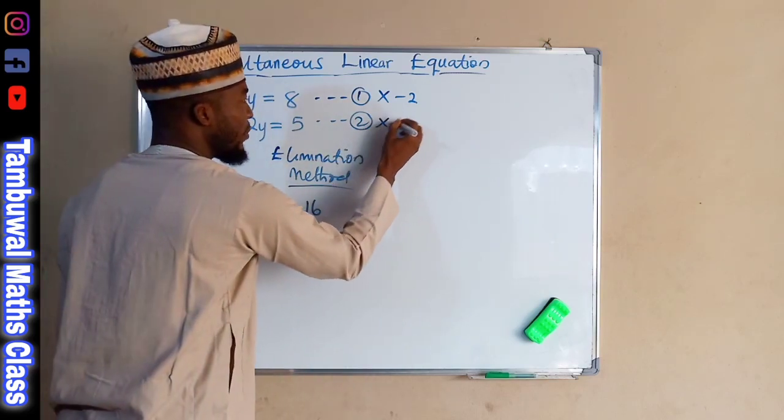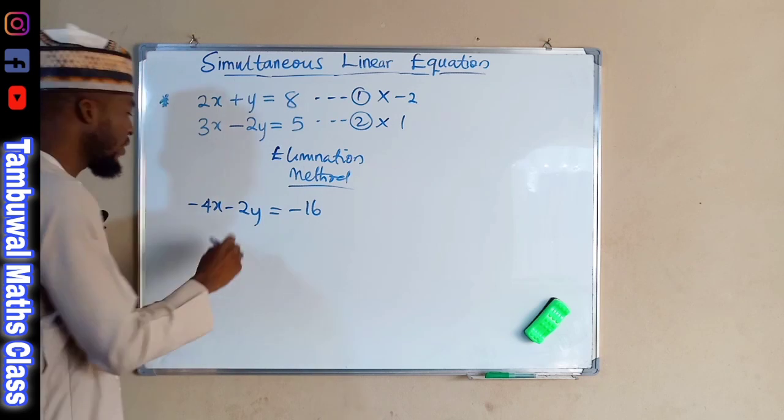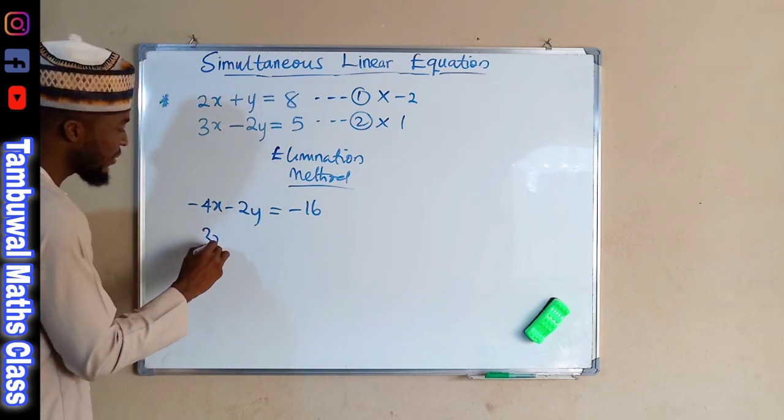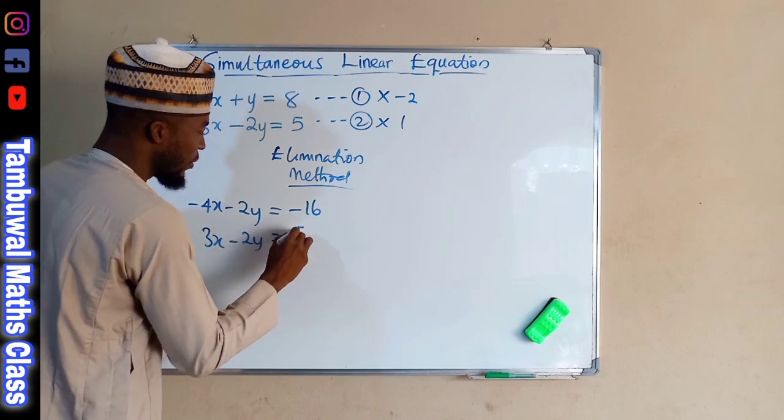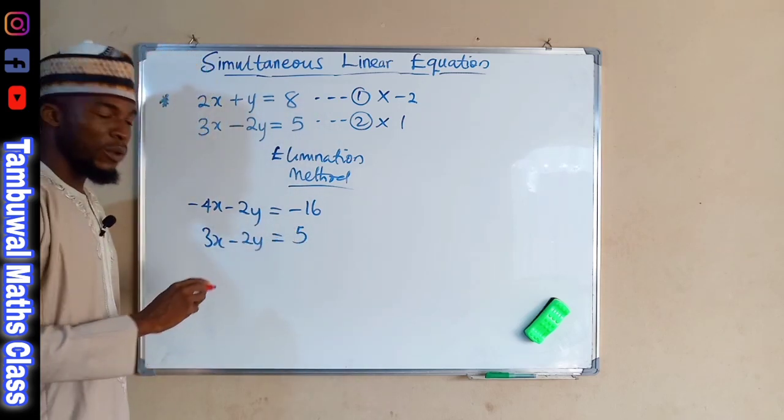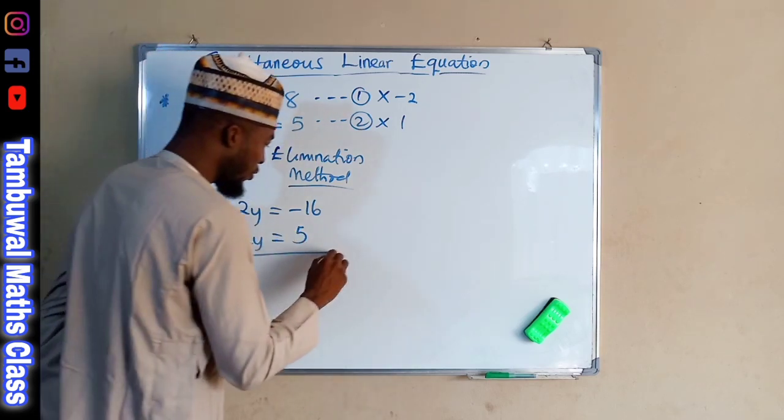And lastly, our constant is going to be negative 16. We have to multiply this by 1, but 1 will not change anything there. So, we have 3X minus 2Y equals 5. These are our new equations.